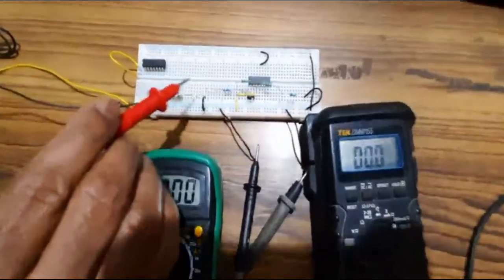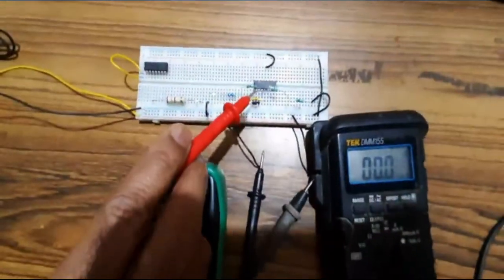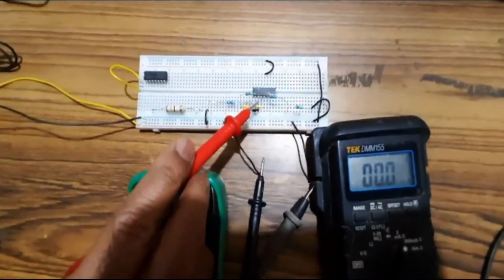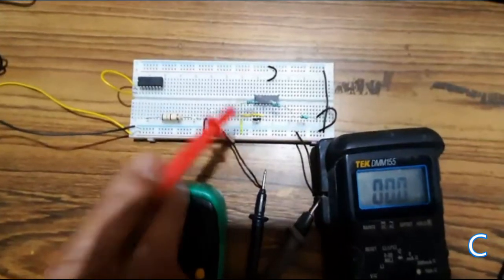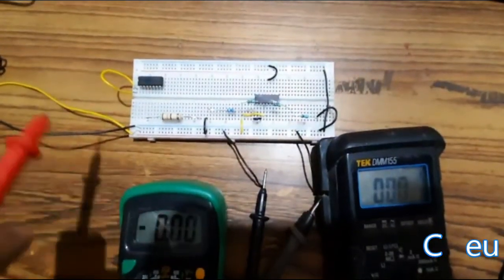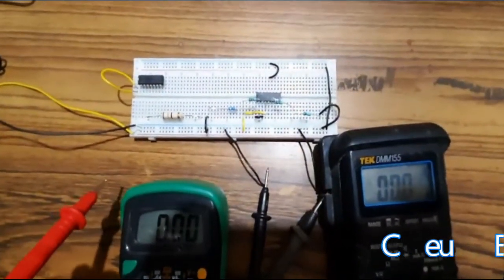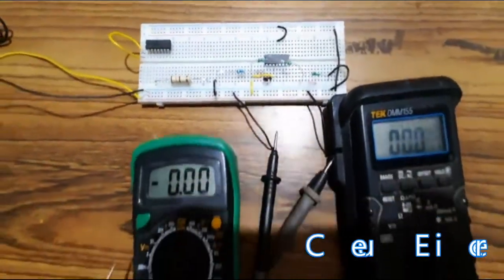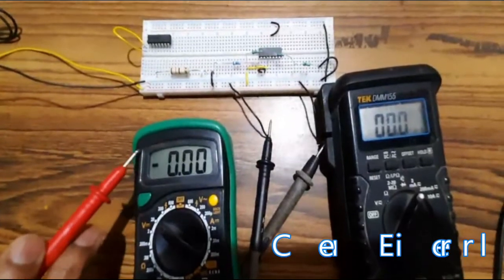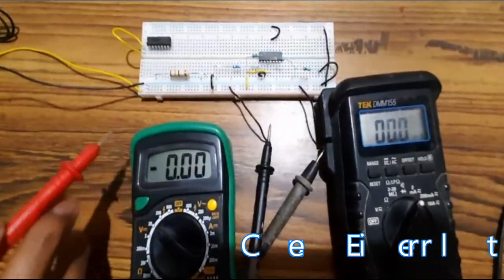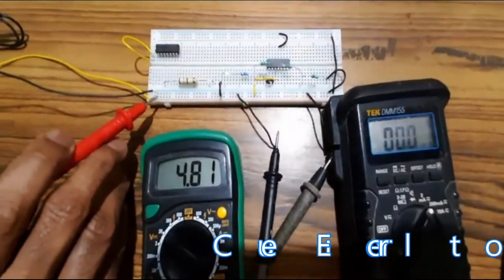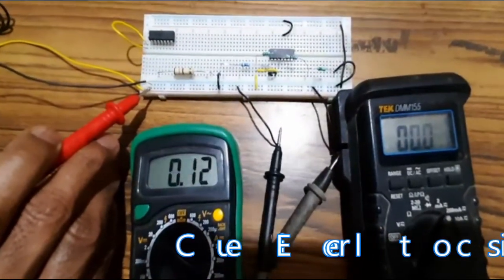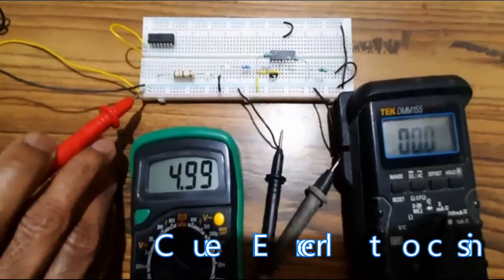For this, I have used LM324 IC, and I have made use of only one op-amp, as we have seen in the board. Now, for this circuit, this meter shows the voltage meter. What is the input voltage?